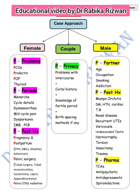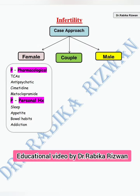P for PCOs, P for periods, P for PID, P for prolactin, and P for pharmacological things — جس میں کے تمام drugs آ جائیں گی.